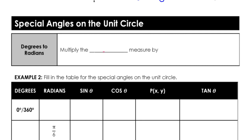Some things we need to know — we might need to convert from degrees to radians as we go through this. To convert to radians from degrees, you're going to multiply the degree measure by pi over 180. So anytime we have a degree amount, we multiply it by pi over 180 to get the amount in radians.